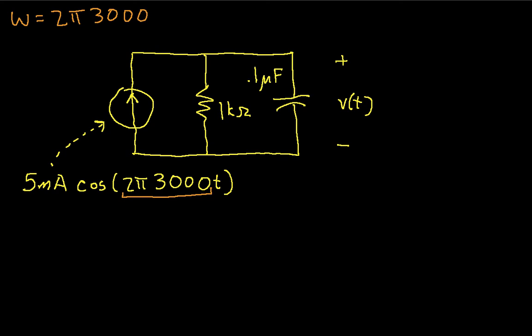So the next thing to do is to replace the time function which is defining the source by an equivalent phasor. So we have 5 milliamps at an angle of zero degrees. That gives us the phasor representation.